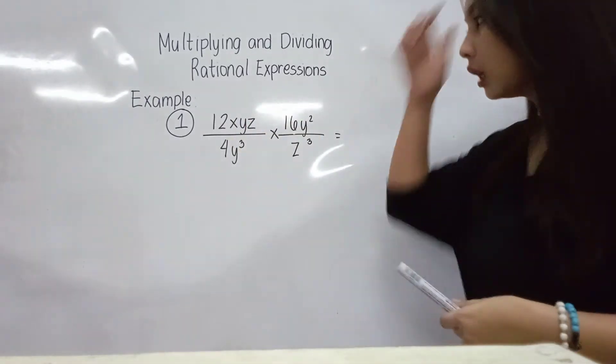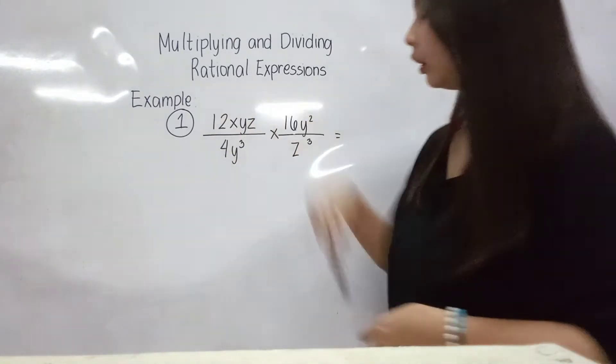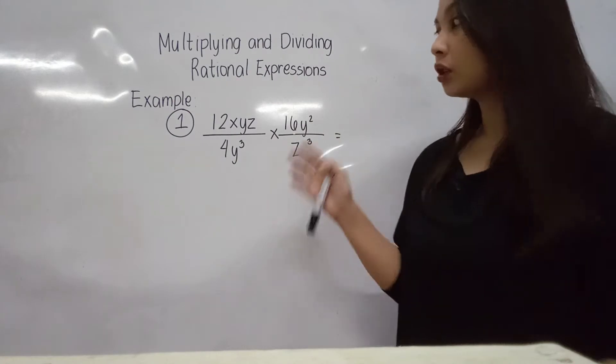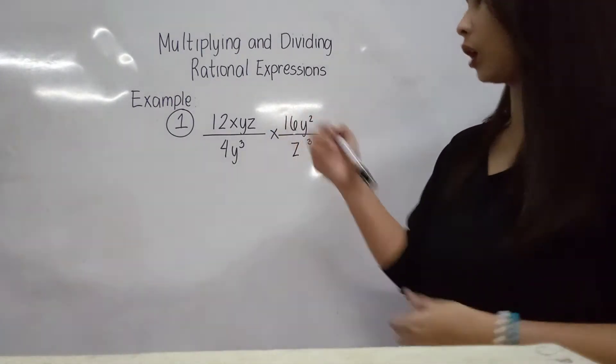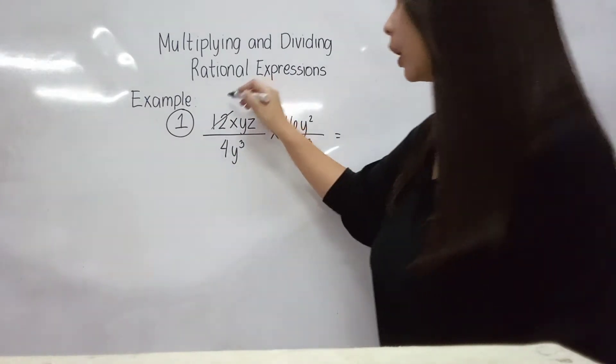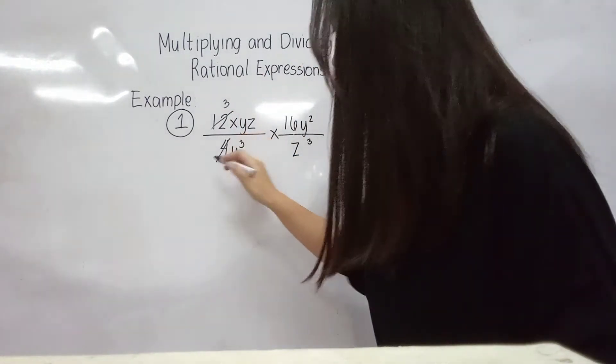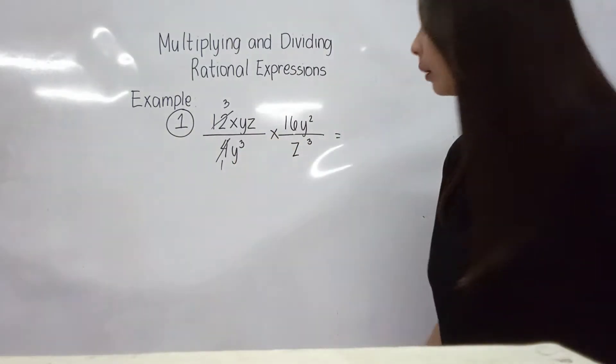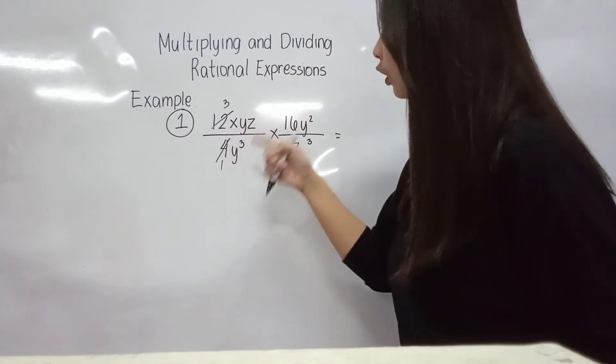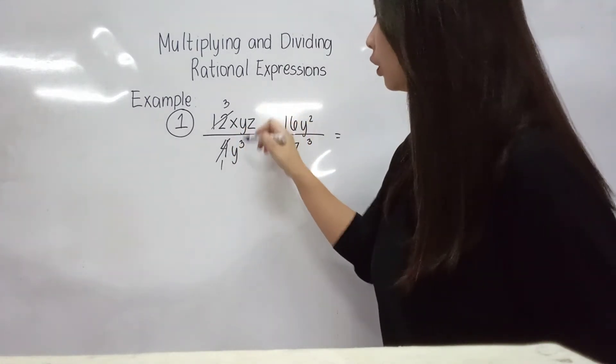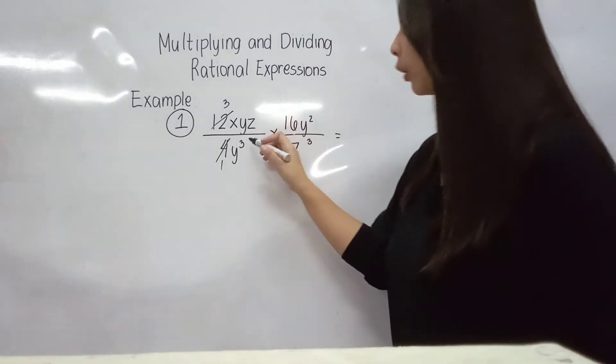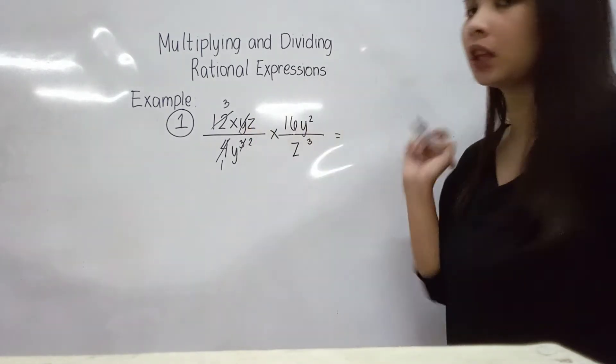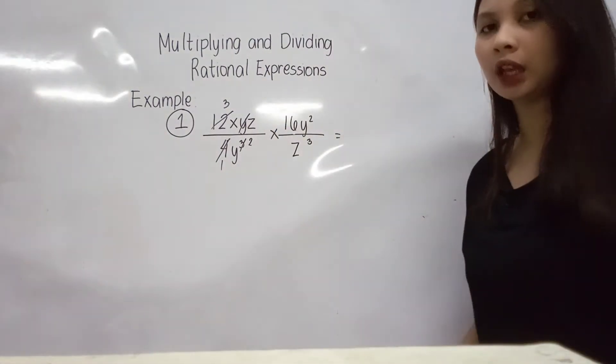So dito, 12xyz and then 4y cubed. Ang 12, kaya ba siyang i-divide ng 4? Yes. 4 times 3 is 12. So pwede natin cancel out. Si 12 magiging 3 na lang, and then si 4 magiging 1. Next, x - wala tayong x sa baba. Y, meron po tayong y. Ilan ang y natin dito? Isa, dito tatlo. So kung saan yung mas mataas, parang ganun yung matitira. So y, cancel out na. And then si 3 magiging 2 na lang sya, kasi pinawasan na natin ng isang y which is galing dun sa taas.